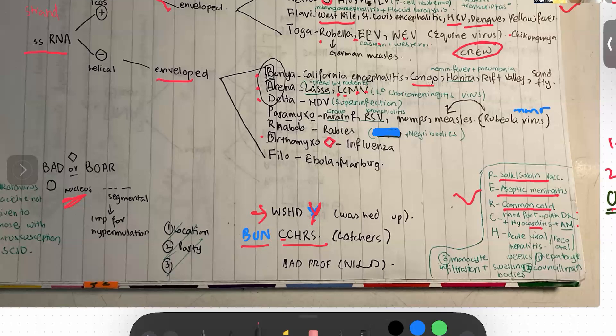The Delta viruses are HDV, and HDV is famous for superinfection. For Prof — Paramyxoviruses — we have Parainfluenza virus which causes croup, RSV which causes bronchiolitis, and the MMR group: Mumps, Measles (Rubeola), and Rubella. Remember: Rubella was German measles and simple measles is caused by the Rubeola virus.